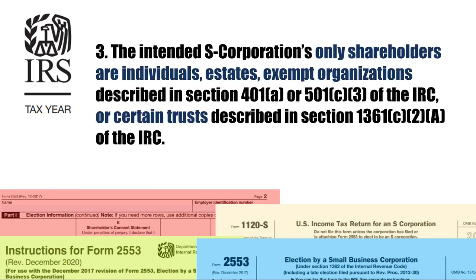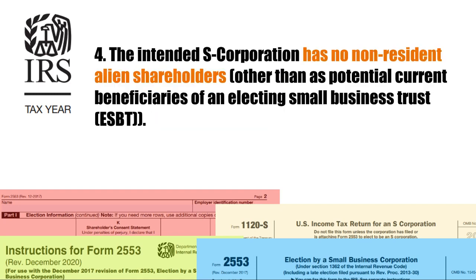Number 3. The intended S-Corporation's only shareholders are individuals, estates, exempt organizations described in Section 401(a) or 501(c)(3) of the Internal Revenue Code, or certain trusts described in Section 1361(c)(2)(A) of the Internal Revenue Code.